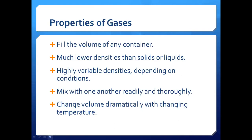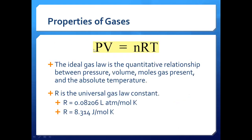Gases change volume dramatically with changing temperature — a remarkable, observable change. This relates to the gas laws. The ideal gas law is PV = nRT, giving the quantitative relationship between pressure, volume, moles of gas, and absolute temperature. R is the universal gas constant, which may take different values depending on the units used in the problem — for English units or SI units.